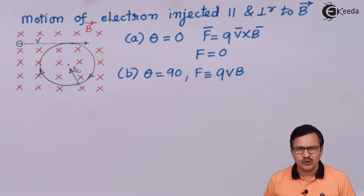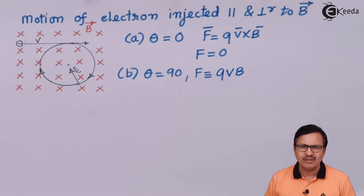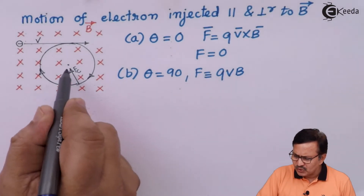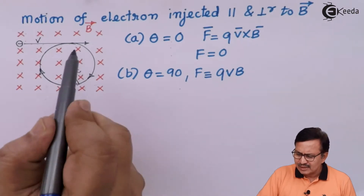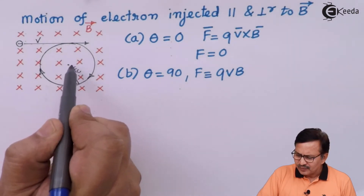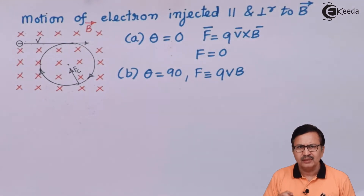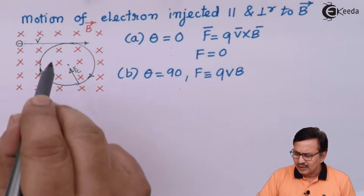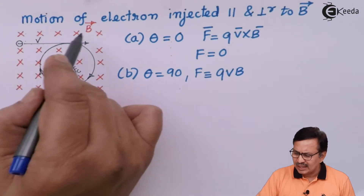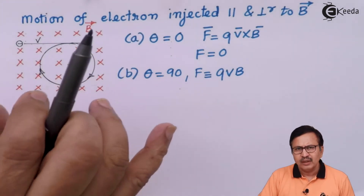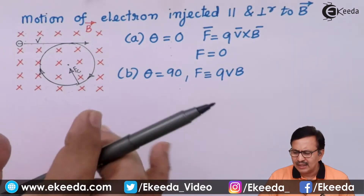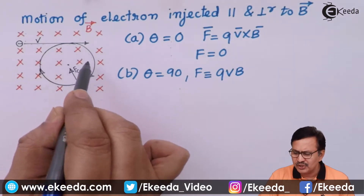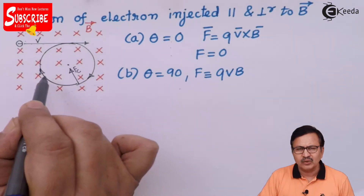This force acts perpendicular to the plane containing the velocity and the magnetic field, so it acts in a direction shown here. At each point, the magnetic force is unable to change the magnitude of the velocity but it changes the direction. If the magnetic field is spread over a substantial area, the electron gets the opportunity to complete a circular path.